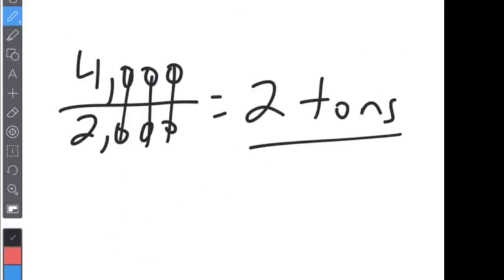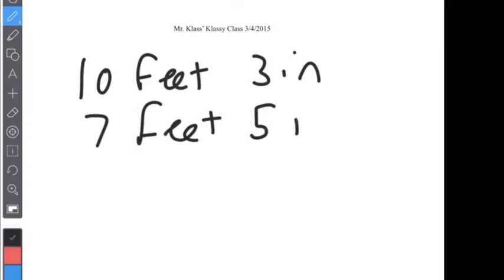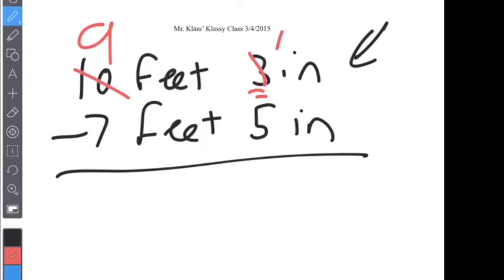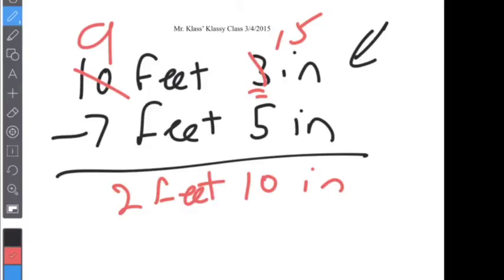There's one more thing I want to show you — adding and subtracting mixed units. Say I have 10 feet 3 inches and I want to subtract 7 feet 5 inches. I can't take 5 inches from 3 inches, so I need to borrow. That makes it 9 feet, and I give the borrowed foot — converted to 12 inches — to the 3 inches, making 15 inches. Then 15 minus 5 is 10 inches, and 9 minus 7 is 2 feet. The answer is 2 feet 10 inches.